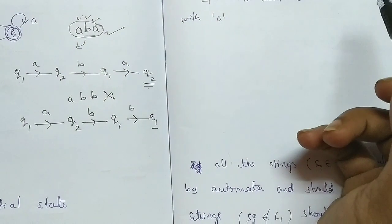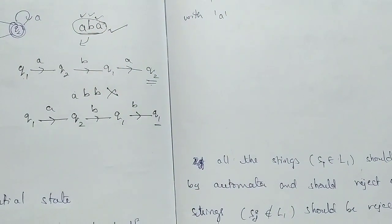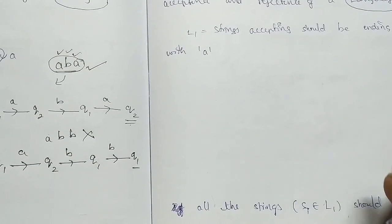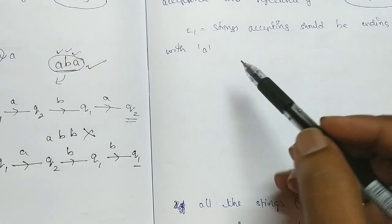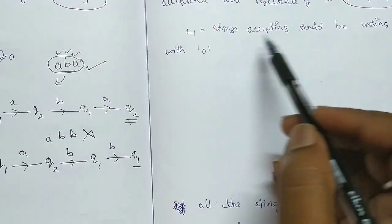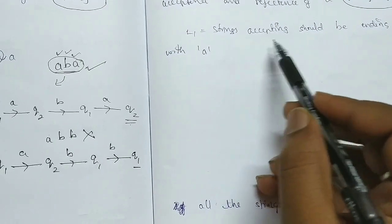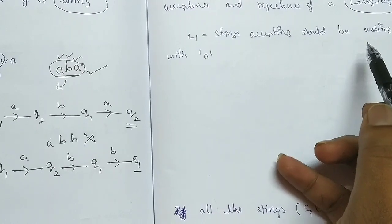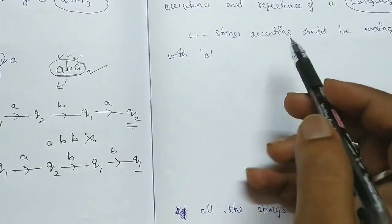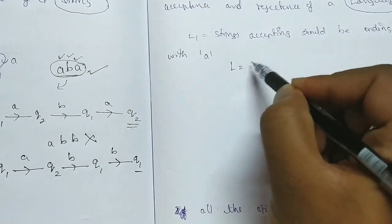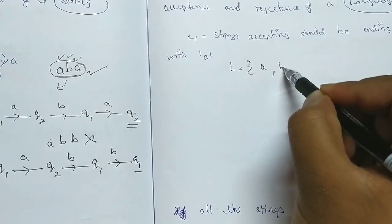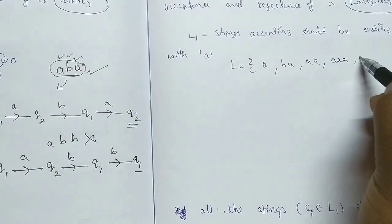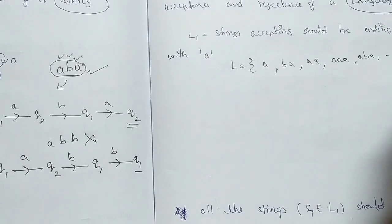What is language-wise acceptance and rejection? Previously we saw string acceptance. Now it is language-wise acceptance. A language L is represented as all the strings that should be ending with 'a'. We are taking a language where strings end with 'a', so the candidate strings ending with 'a' include: 'ba', 'aa', 'aaa', 'aba', and similar kinds of strings.